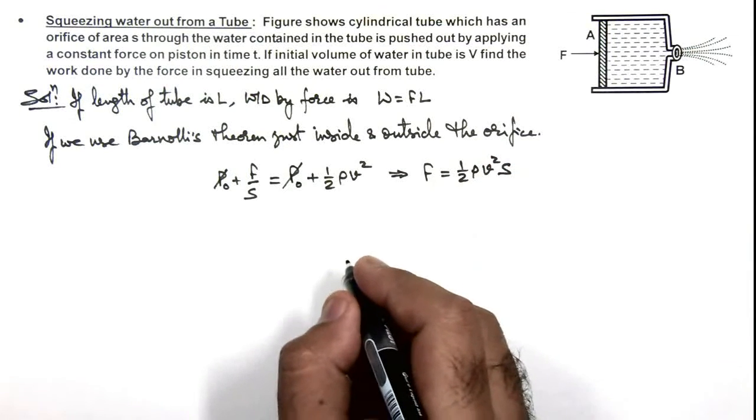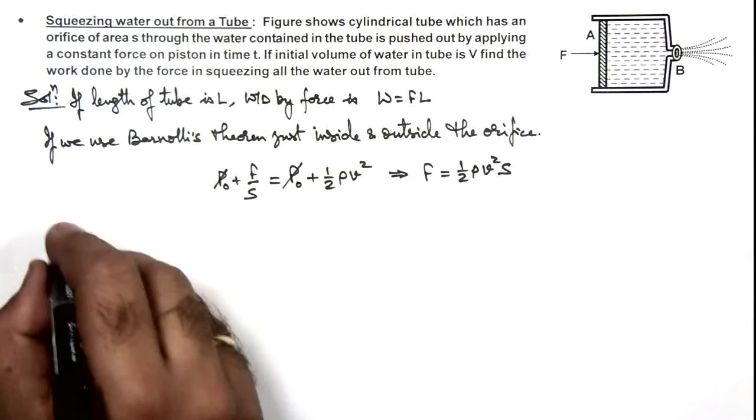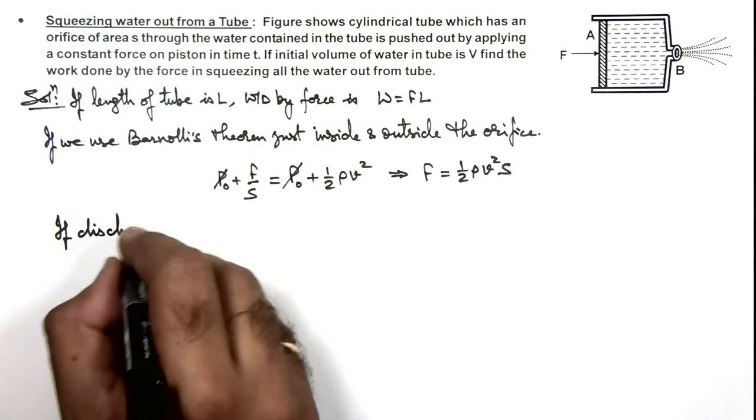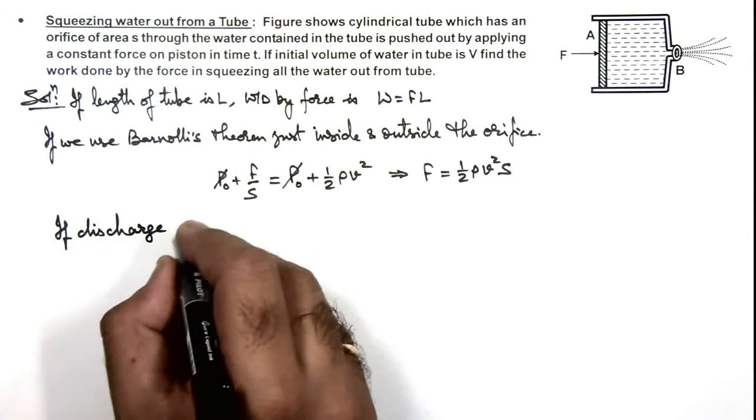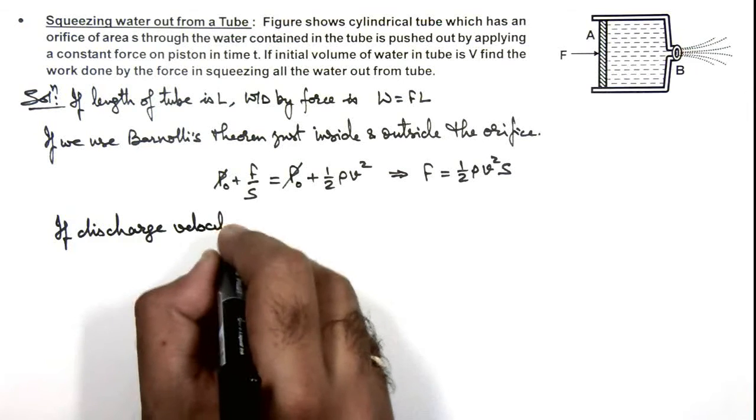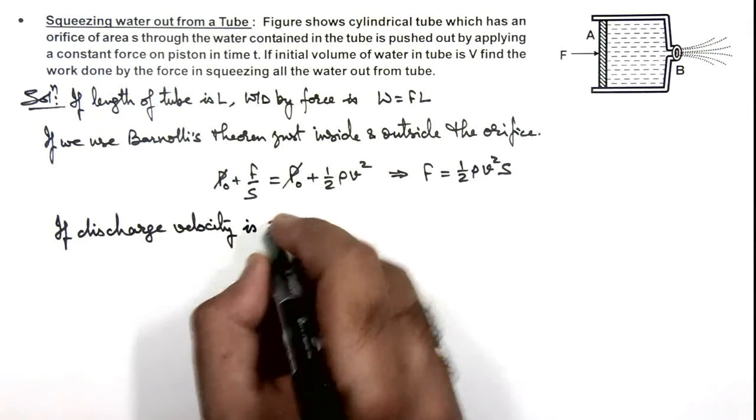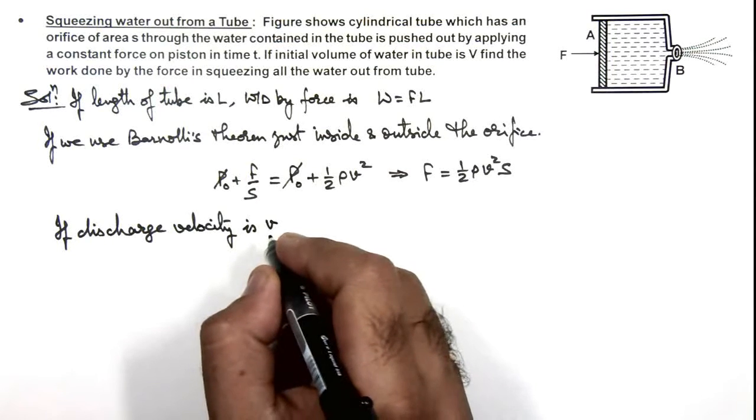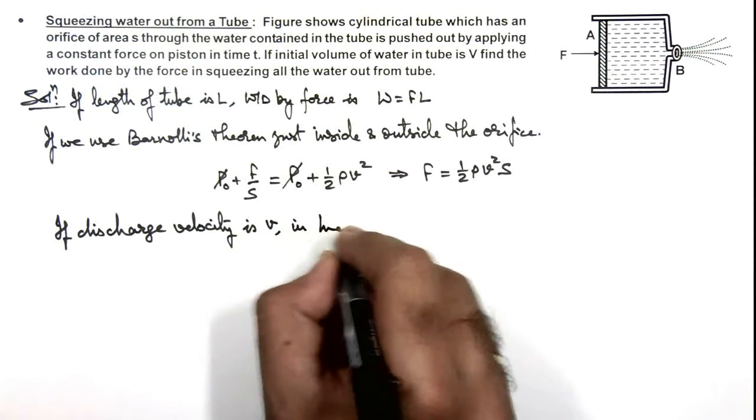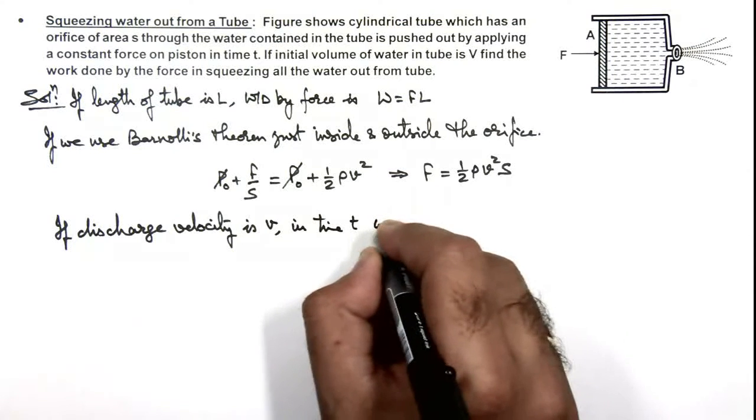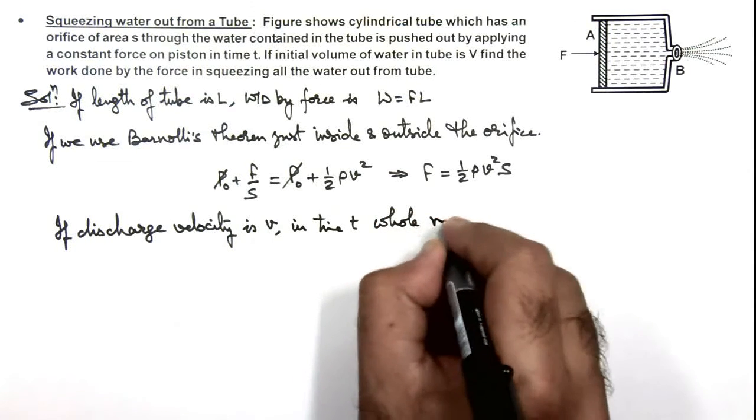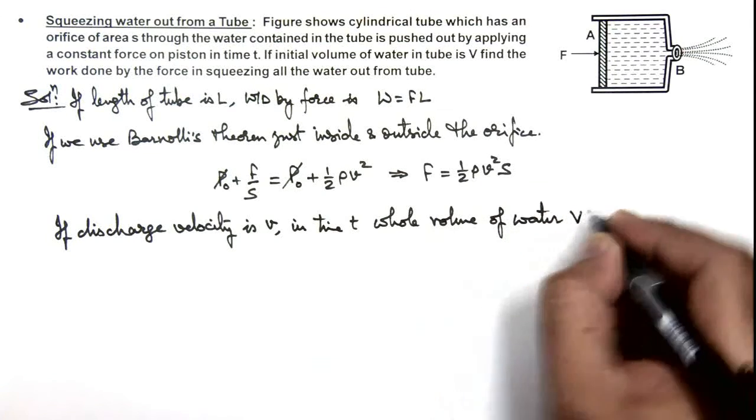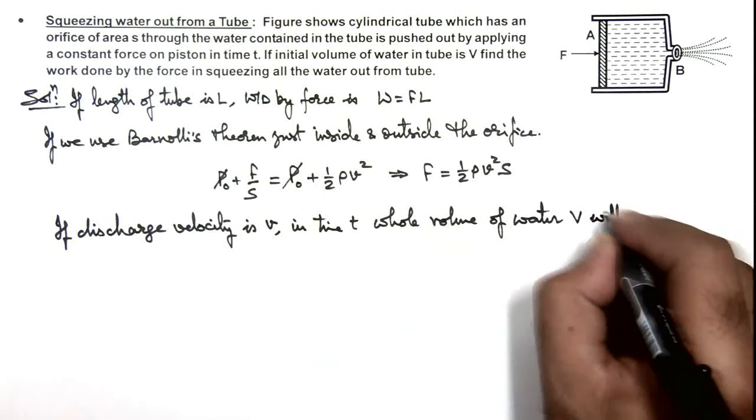In this situation we can write: if discharge velocity is v, then in time t, the whole volume of water V will come out.